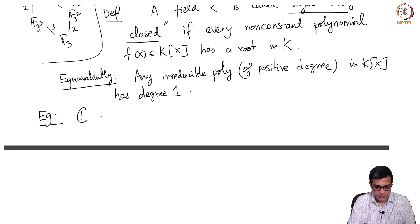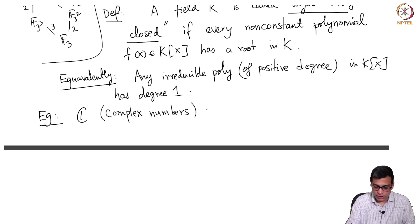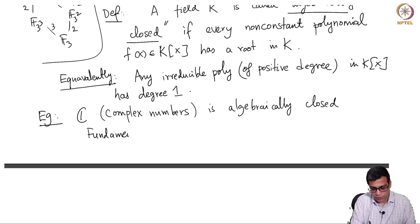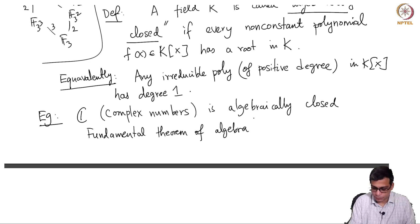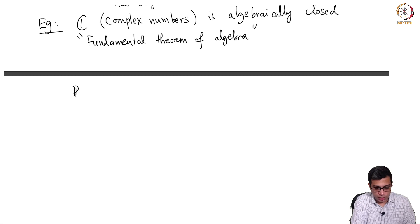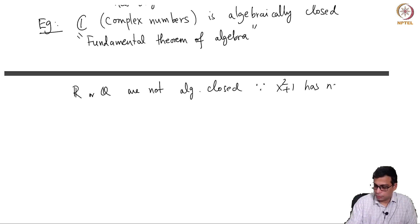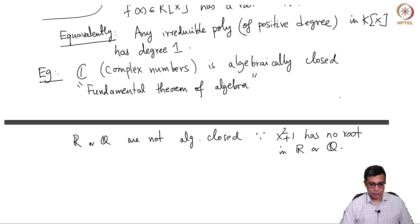The standard example of an algebraically closed field is C, the field of complex numbers. C is algebraically closed, and this is the statement of the fundamental theorem of algebra, which has many different proofs. On the other hand, R and Q are not algebraically closed, because x² + 1 has no root in R or Q.